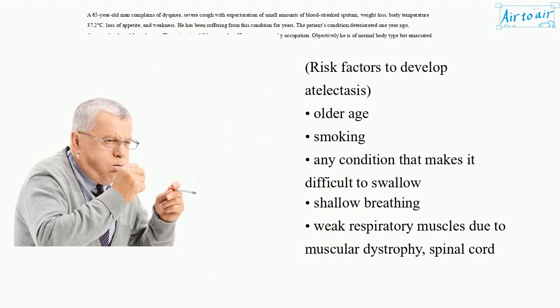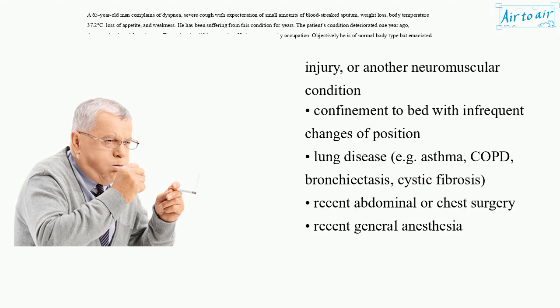Risk factors to develop atelectasis: older age, smoking, any condition that makes it difficult to swallow, shallow breathing, weak respiratory muscles due to muscular dystrophy, spinal cord injury, or another neuromuscular condition, confinement to bed with infrequent changes of position, lung disease (e.g. asthma, COPD, bronchiectasis, cystic fibrosis), recent abdominal or chest surgery, and recent general anesthesia.